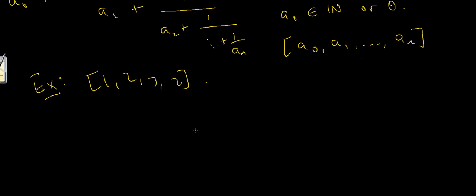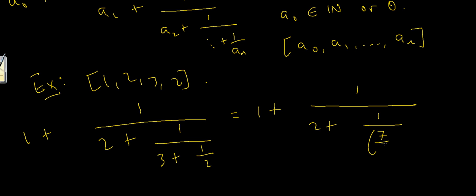So let's just write it out because that's the best place to start. The continued fraction of 1, 2, 3, 2 looks like 1 plus 1 divided by 2 plus 1 divided by 3 plus 1 divided by our last term which is 2. Now from this point we can just simplify things. We know that 3 plus 1 half is 7 halves. So this becomes 1 plus 1 over 2 plus 1 over 7 over 2.